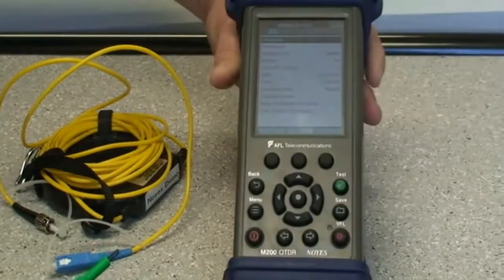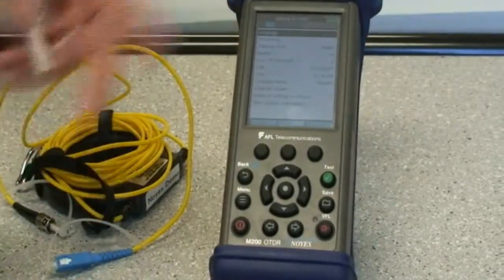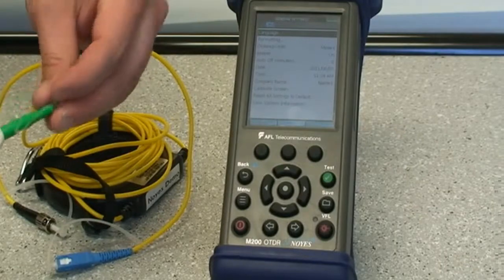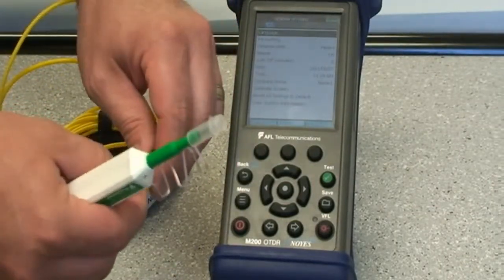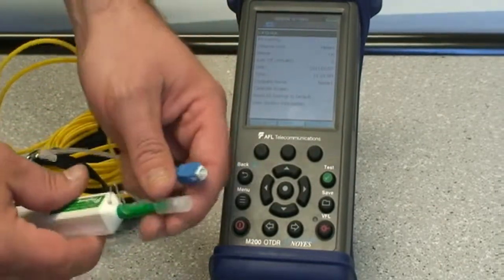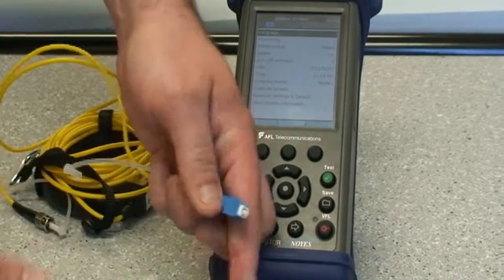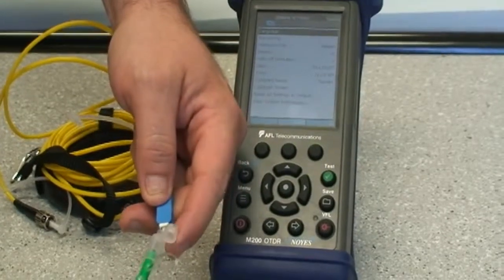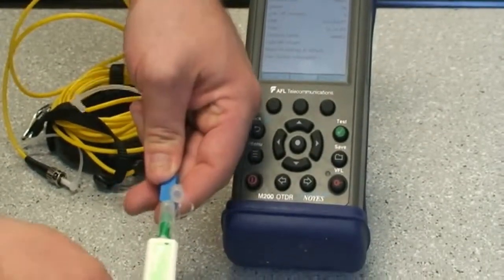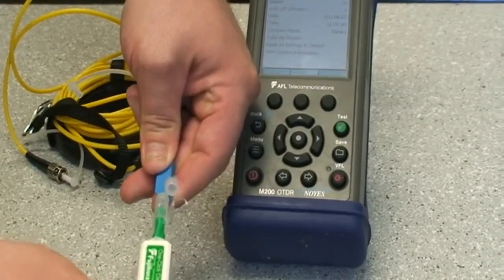When testing with the OTDR, you should do this on the equipment as well as on the fiber ring or launch cable that you're using. To do this, use the adapter that comes with the one-click cleaner and simply insert it to the end of the connector and press until you hear the audible click.